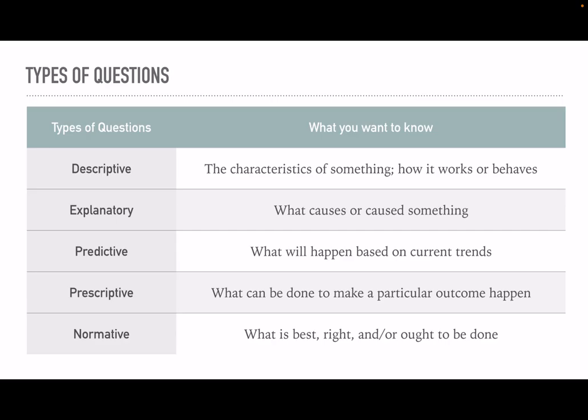A normative question asks what should we do — what is best, what is right, what ought to be done. It will make explanatory, predictive, and descriptive moves, but fundamentally the question guiding the research is what is good. Normative questions often come tied together with other sorts of questions — there's a normative question motivating the study, but at the same time you need something empirical to understand it, so you try to balance those two out.